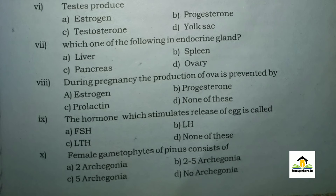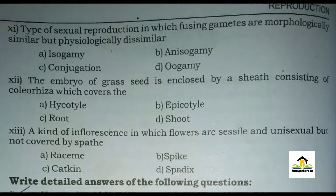...A: 2 archegonia, B: 2 to 5 archegonia, C: 5 archegonia, D: no archegonia. The right answer for MCQ number ten is B: 2 to 5 archegonia. MCQ number eleven: The type of sexual reproduction in which fusing gametes are morphologically similar but physiologically dissimilar...